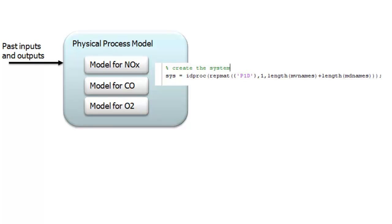For our optimizer, we create models for the main control variables: NOx, CO, and oxygen. We then use these models to calculate our predicted values of these variables over the prediction horizon.